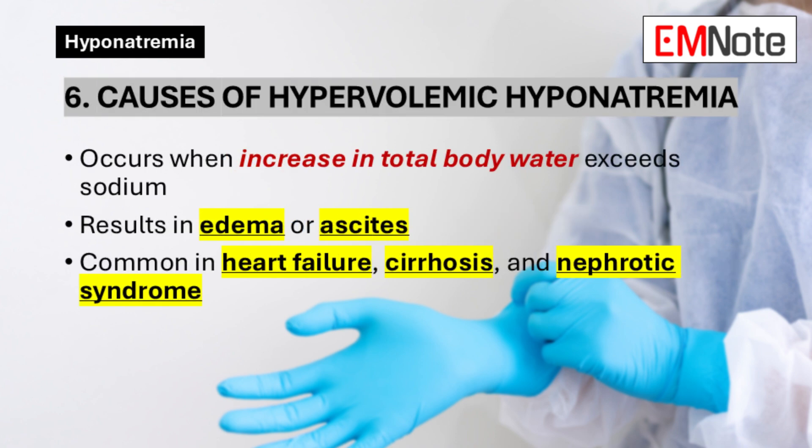Point 6: Causes of Hypervolemic Hyponatremia. Hypervolemic hyponatremia occurs when there is an increase in both total body sodium and water, but the increase in water is disproportionately greater. This leads to edema or ascites and can be caused by conditions like congestive heart failure, cirrhosis, and nephrotic syndrome.